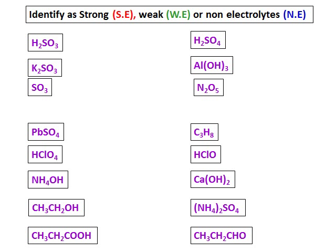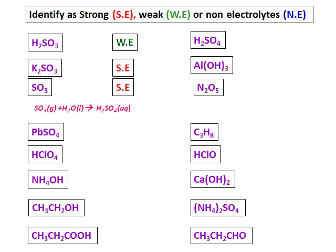Let's do some practice questions. Sulfurous acid is a weak electrolyte because it is not one of the seven strong acids. K2SO3 is a strong electrolyte because it is an ionic compound. SO3 is a strong electrolyte because when dissolved in water it gives sulfuric acid, which is a strong acid. PbSO4, an ionic compound, is therefore a strong electrolyte. HClO4 is a strong acid, so it's a strong electrolyte.